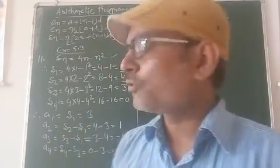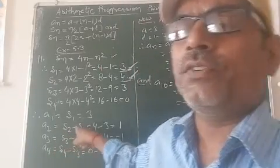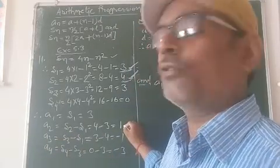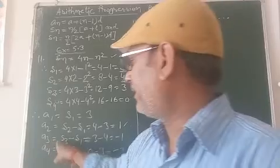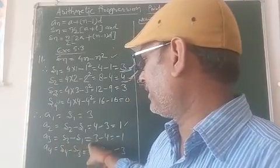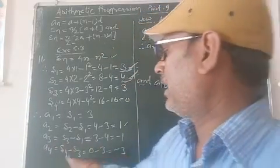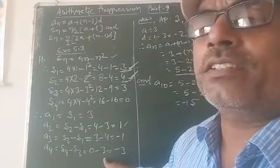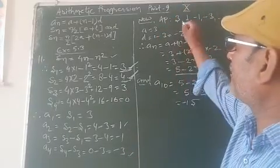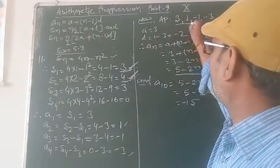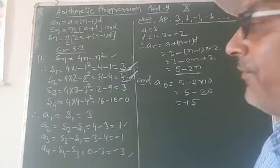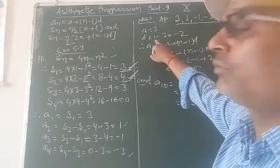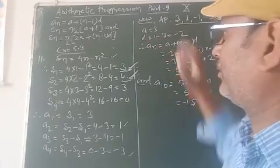A2 equals S2 minus S1. The sum of first two terms minus the sum of the first term. A2 equals 4 minus 3 equals 1. Then A3 equals S3 minus S2 equals 3 minus 4 equals minus 1. A4 equals S4 minus S3 equals 0 minus 3 equals minus 3. So the AP is 3, 1, minus 1, minus 3, and so on. Here a equals 3 and d, the common difference, equals 1 minus 3 equals minus 2.